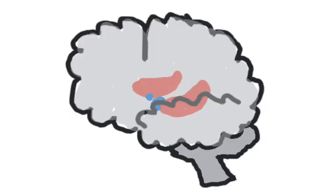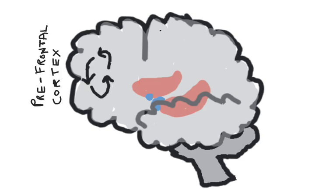Let's start with memory. Short-term memory involves electrical activity in the prefrontal cortex. If these action potentials stop firing, the memory will be lost. To convert this into a more long-term memory requires activity of the hippocampus, which can consolidate short-term memories into long-term memories stored elsewhere in the cortex.